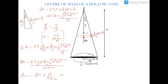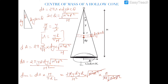So dm = dA · M / (πR · √(h² + R²)). Substituting dA = 2π · y · dy · R/h² · √(h² + R²), and cancelling √(h² + R²) with √(h² + R²), and π with π, and R with R, dm simplifies to 2yM dy / h².